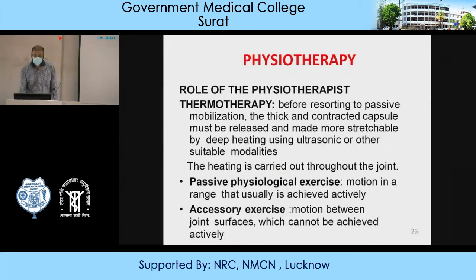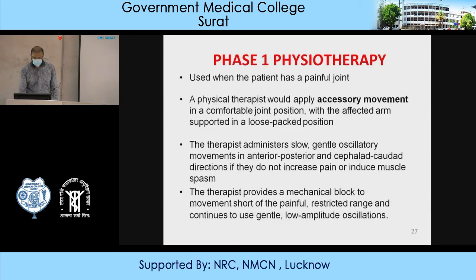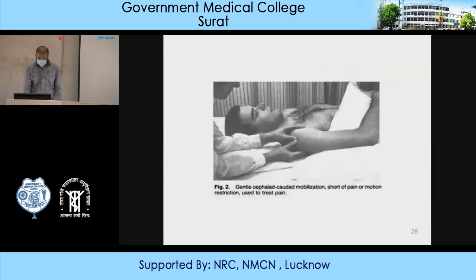Regarding physiotherapy, before resorting to passive mobilization, the deep and contracted capsule must be released and made more stretchable by deep heating using ultrasound and suitable modalities. Phase 1 physiotherapy is used when the patient has painful movement. The physical therapist applies accessory movement in a comfortable loose-packed position, administering slow, gentle oscillatory movement in the anterior-posterior and cephalocaudal direction if they do not increase pain or induce muscle spasm. The therapist provides a mechanical block to movement short of the painful restricted range using gentle low-amplitude oscillation.